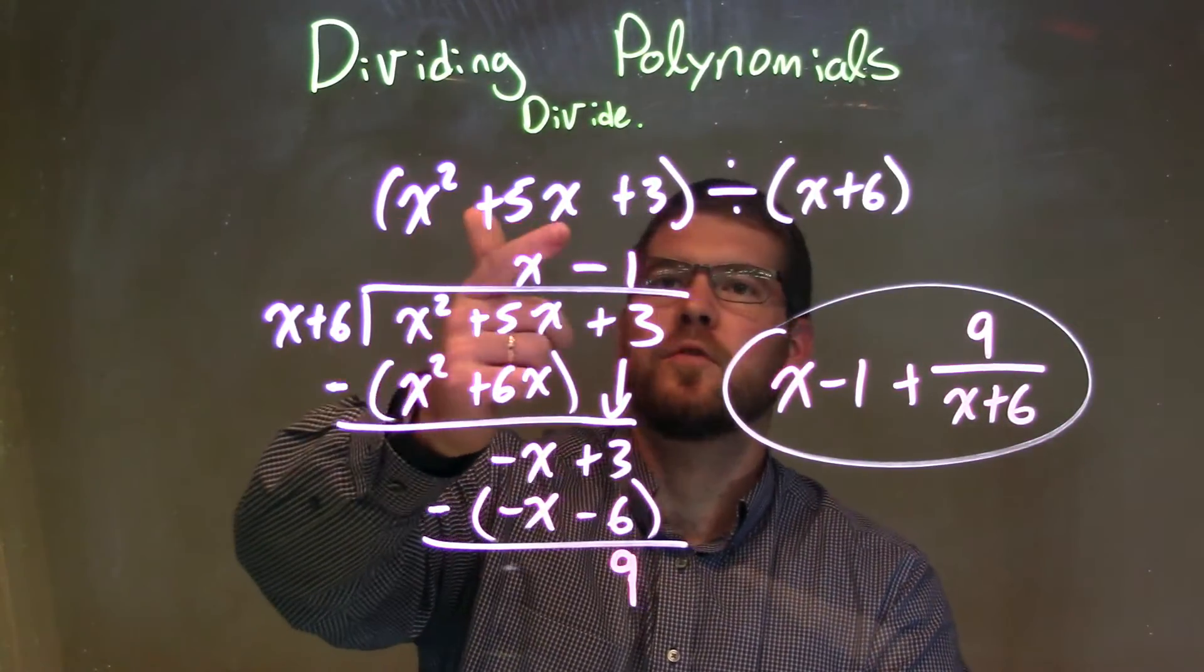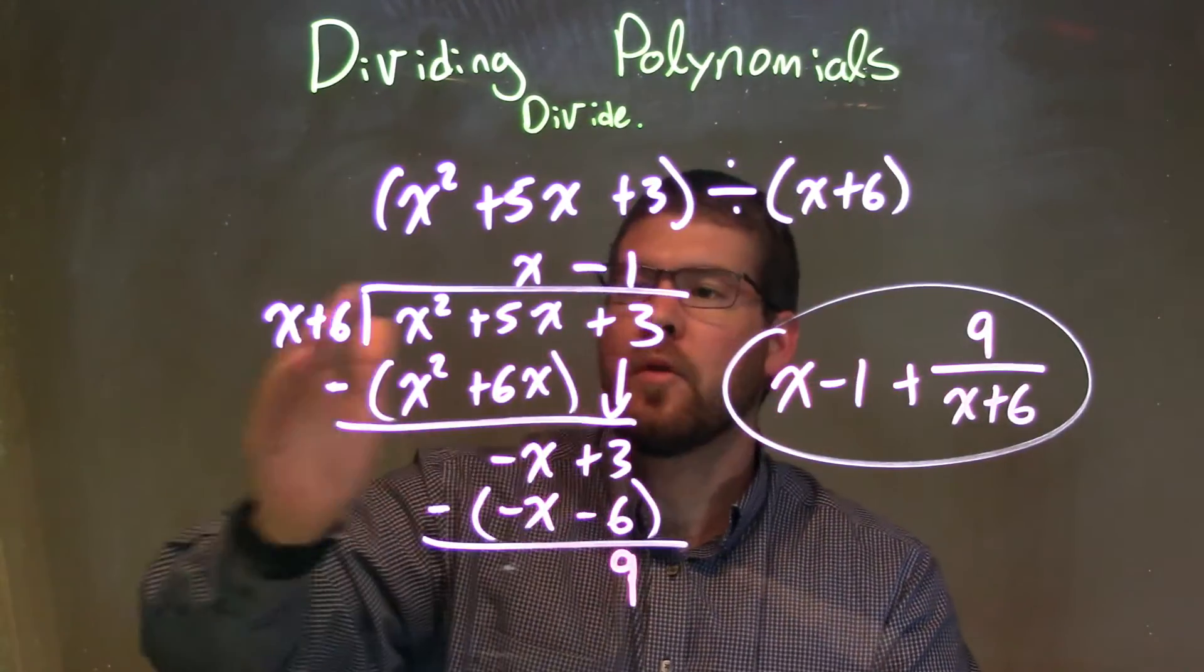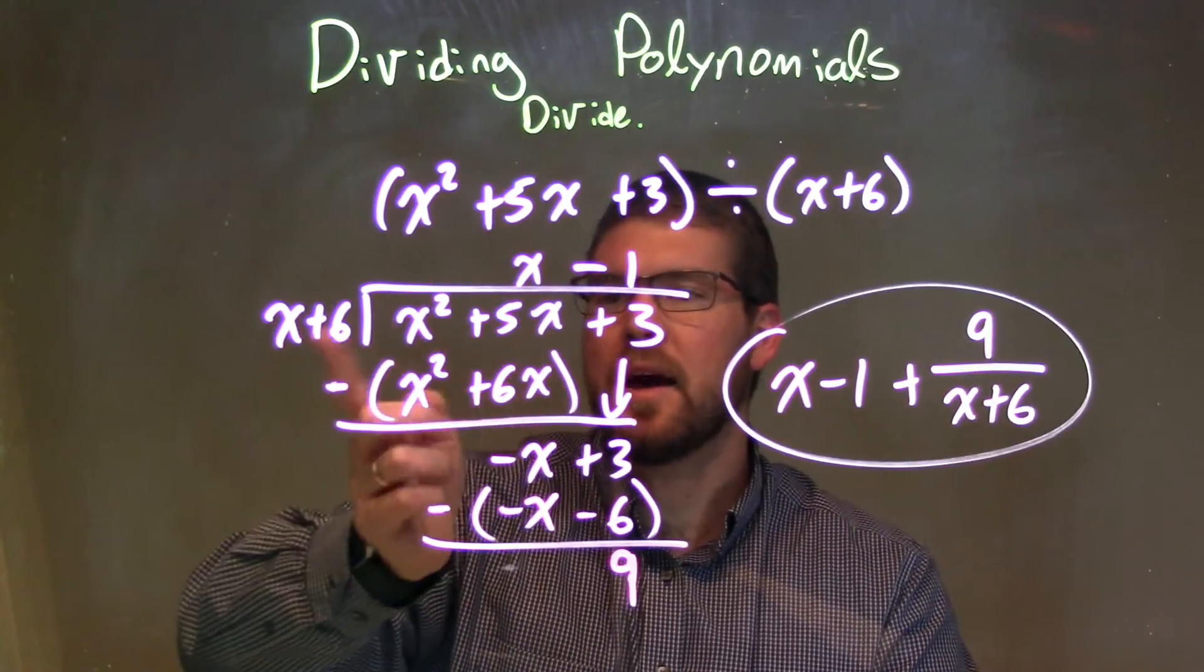So let's recap. We're given x squared plus 5x plus 3 divided by x plus 6. Well, I rewrote it right here. Our divisor goes into our dividend. And I said, okay, what times x gives me x squared? That's x.